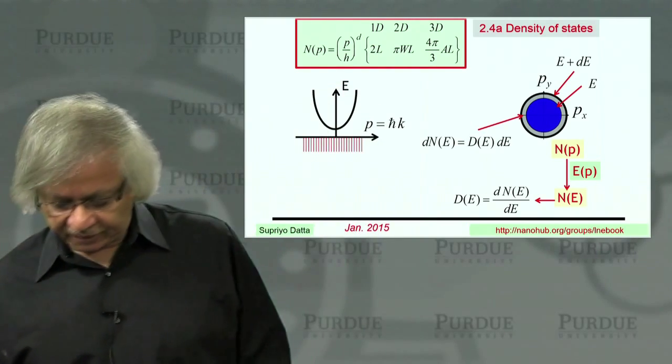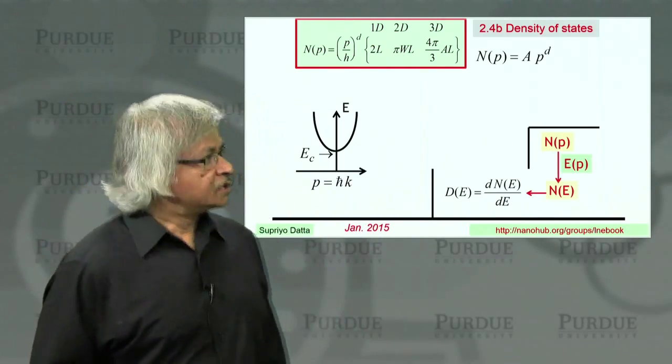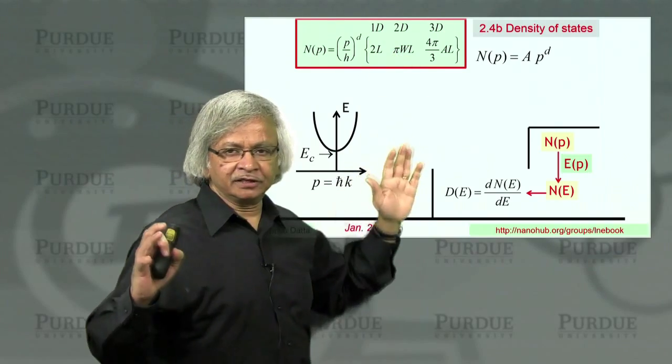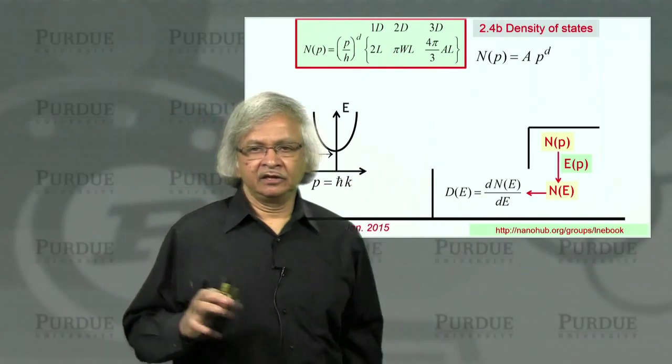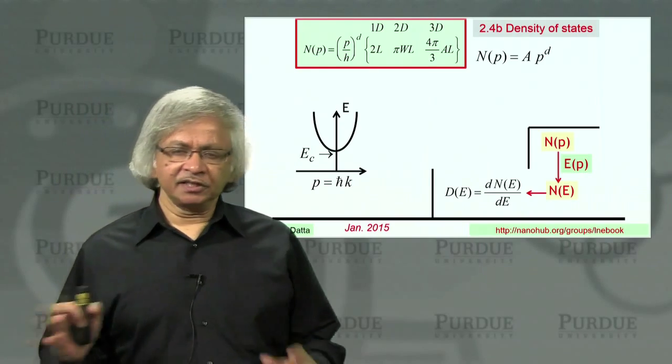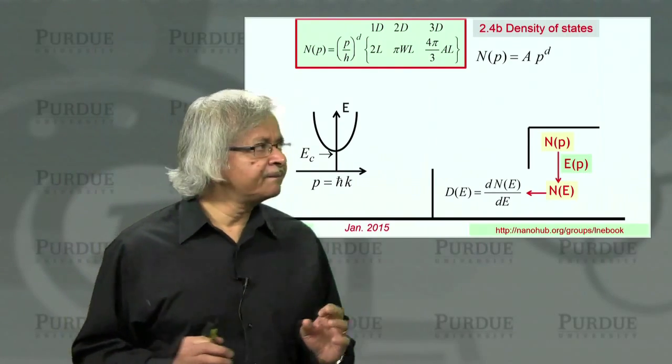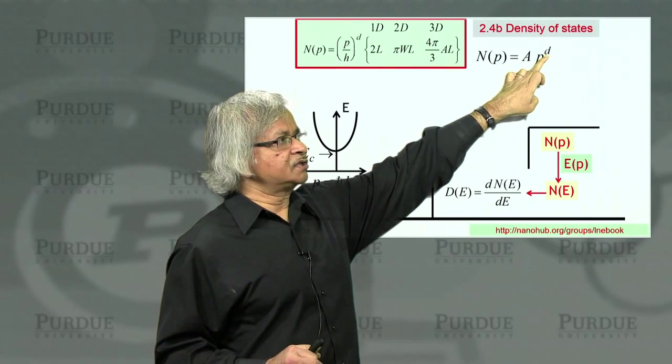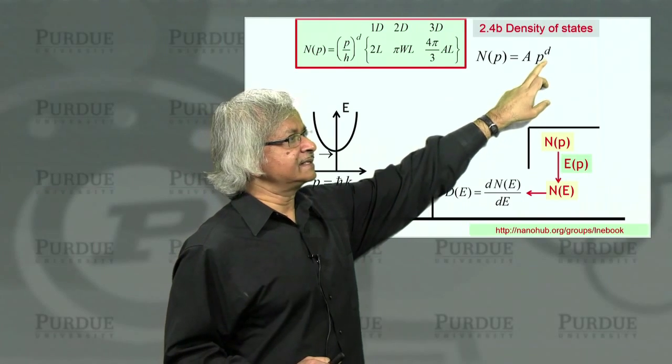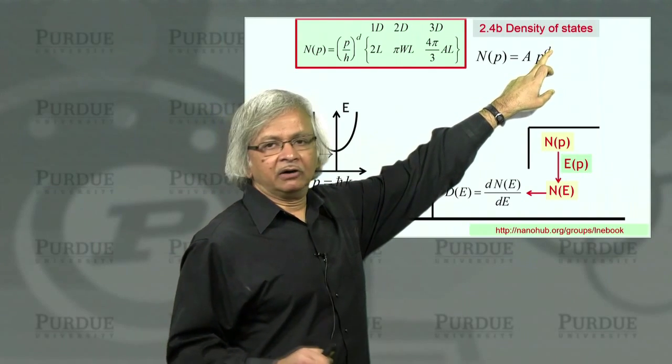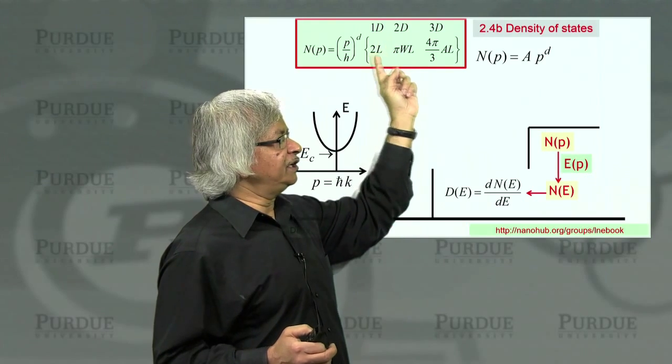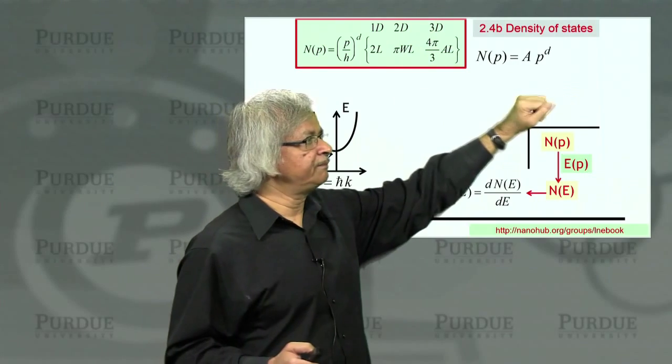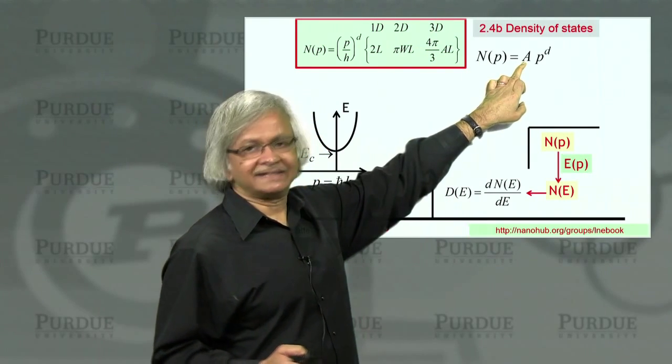So now let's get on to a specific example. We have a function called N of p. In deducing that function, we didn't have to worry about any energy momentum relation. It's a perfectly general argument, but the result depends on the dimensions, which I'll represent with a small d. So we write N as momentum to the power d - in 1D it's proportional to p to the power 1, 2D is p squared, 3D is p cubed.